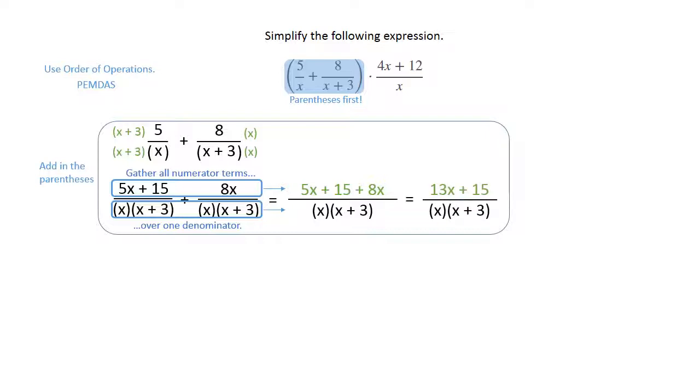The 5 and the 8 give us 13x, and we've got plus the 15 over x times x plus 3. That was the parentheses part, and now we have to multiply.